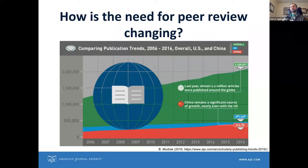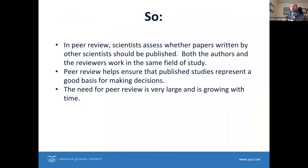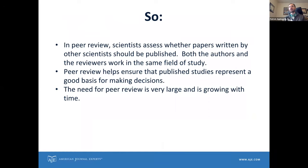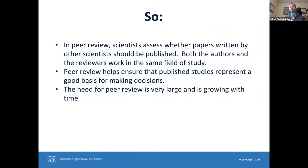To summarize what I've been discussing: peer review is the process by which scientists assess whether papers written by other people should be published. The peer part indicates that authors and reviewers should work in the same field of study so that they have similar expertise. The reason we do this is because peer-reviewed studies are used as a basis for decision making, and we have to have some way of ensuring the quality of what makes it into the scientific literature. We need a lot of peer reviews every year to sustain the current level of scientific publishing.